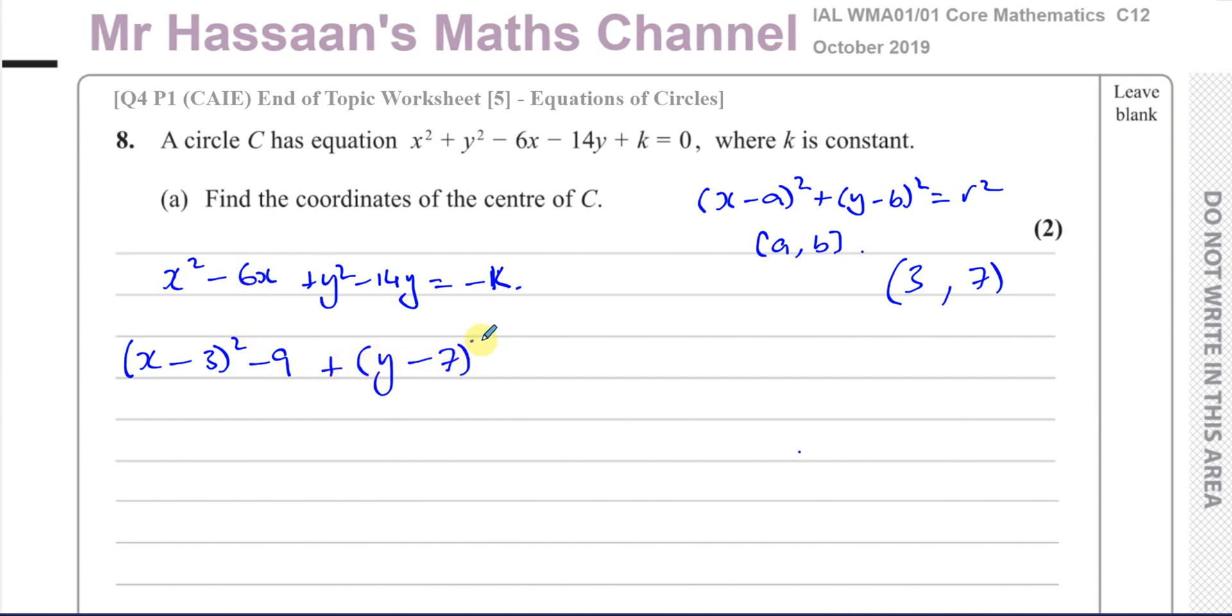The same thing for y: (y - 7)² and take away the square of 7, which is 49. That's equal to negative k. So now I can say (x - 3)² + (y - 7)² equals -9 - 49 is -58, so I add that to both sides to get 58 - k.